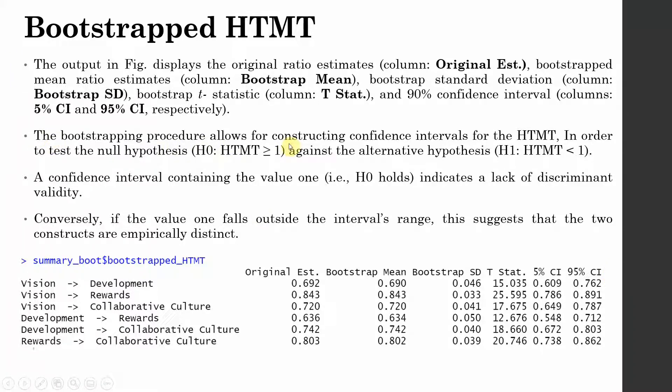In order to test the null hypothesis, that is H0 HTMT greater than or equal to 1 against the alternate hypothesis, that is H1 HTMT less than 1. A confidence interval containing the value 1, that is H0 holds. This one holds. If there is a 1 here, is there a 1 here?